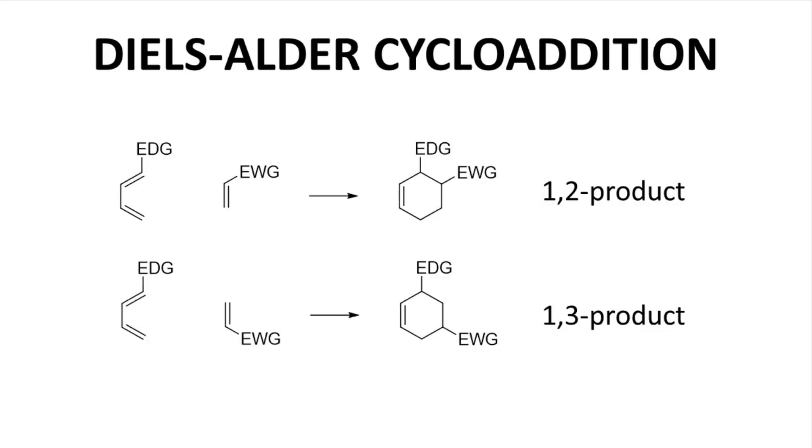The last reaction is the Diels-Alder cycloaddition. In general, with the Diels-Alder, the diene bears an electron donating group, and the dienophile has an electron withdrawing group. These groups provide a point of reference for visualizing the different possible regioisomeric products. In the top reaction, the cycloaddition forms the 1,2 product. In the bottom reaction, the cycloaddition forms the 1,3 product. Which one is favored?